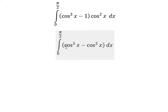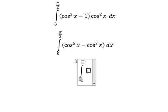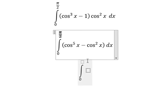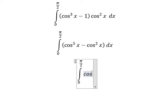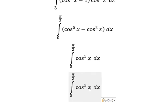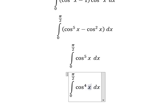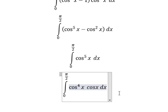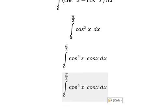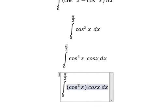Now I will calculate this one. So cosine x to the power of five, we can write it as cosine x to the power of four times cosine x. This one we can write as cosine x squared, everything to the power of two.